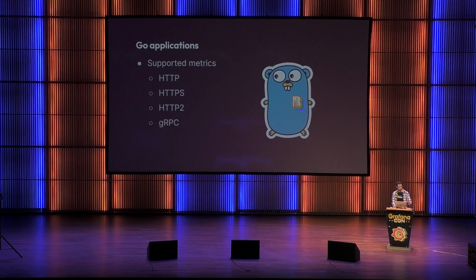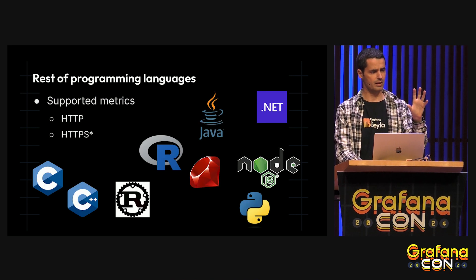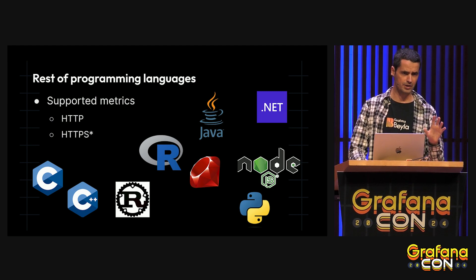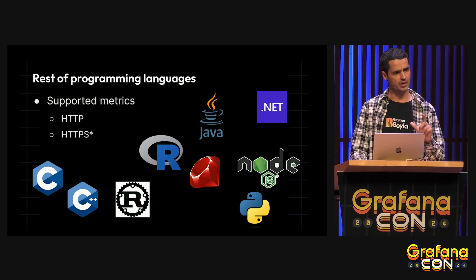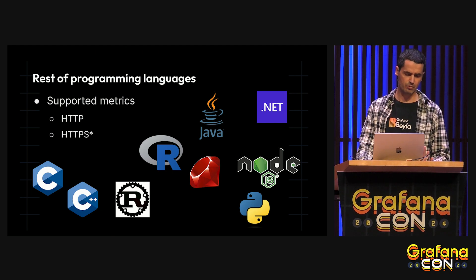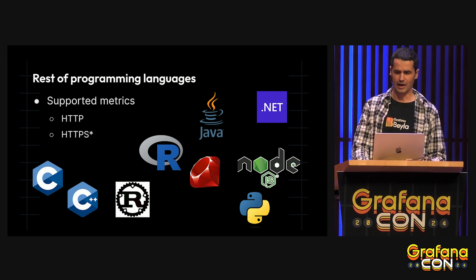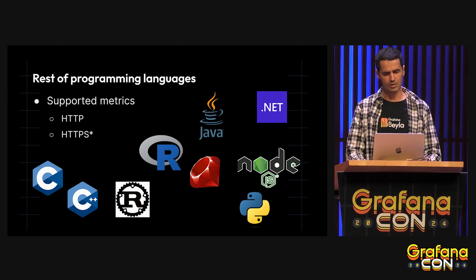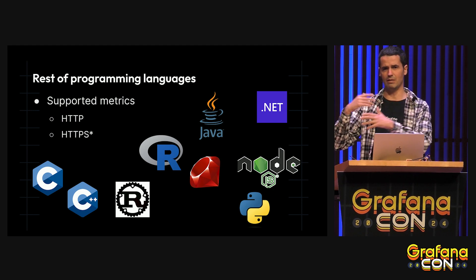For Go, Vila hooks into the Go libraries at runtime. But Vila is also able to hook and listen to some kernel libraries. That way it's able to provide basic metrics for almost any other language — for example, HTTP and HTTPS metrics for virtually any language that can run on Linux, and HTTPS for any language except Java. Java brings its own TLS library which is compiled at the Java bytecode level, making it much more complex.